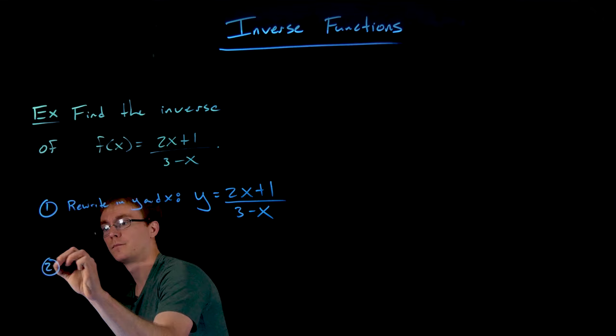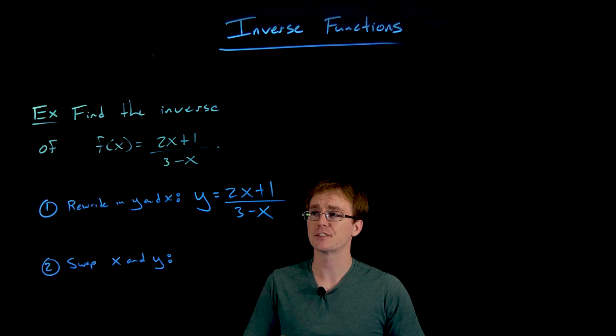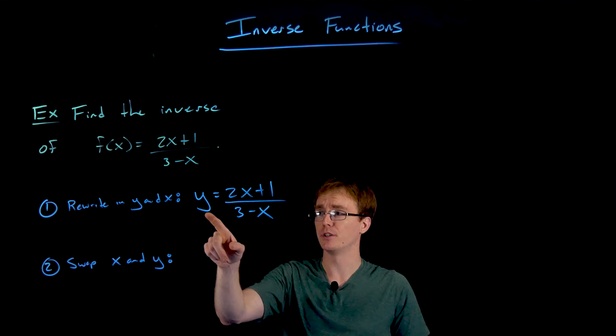And so what this equation, y equals 2x plus 1 over 3 minus x, is really telling us is the rule that is true for our function that connects the inputs or the x values to the outputs or our y values.